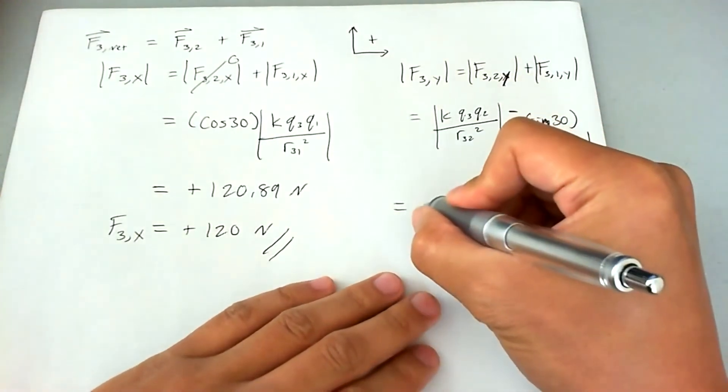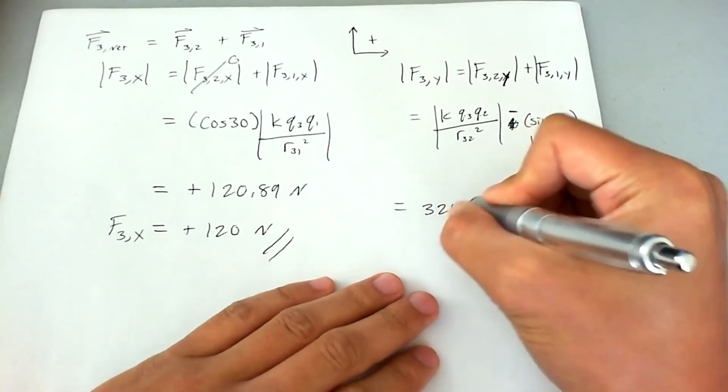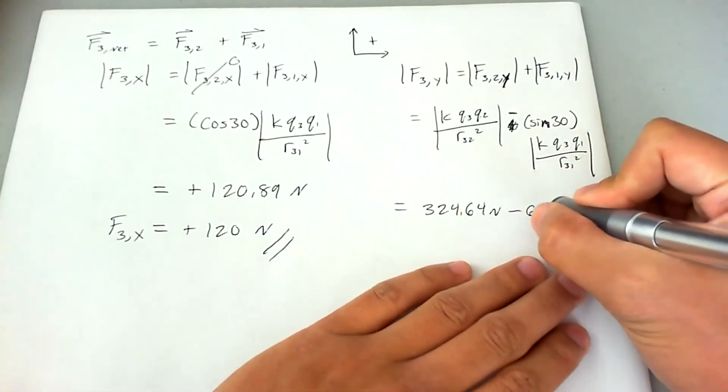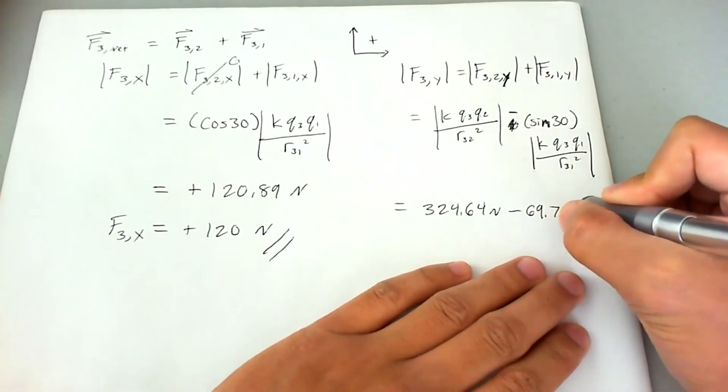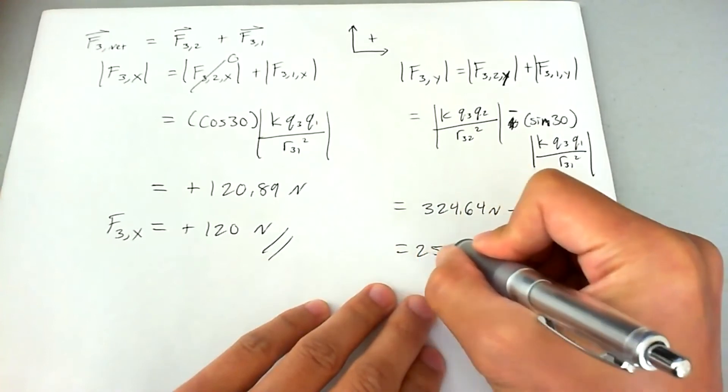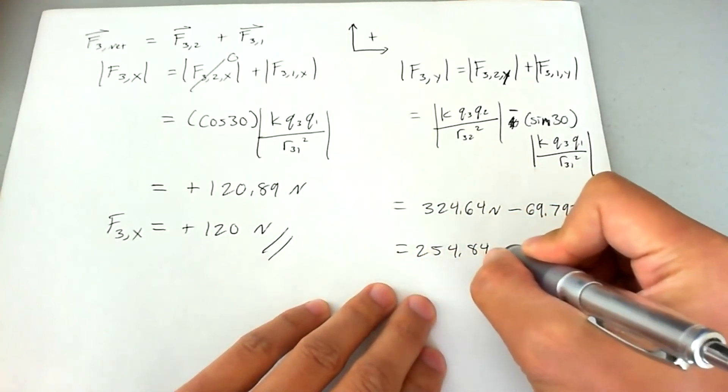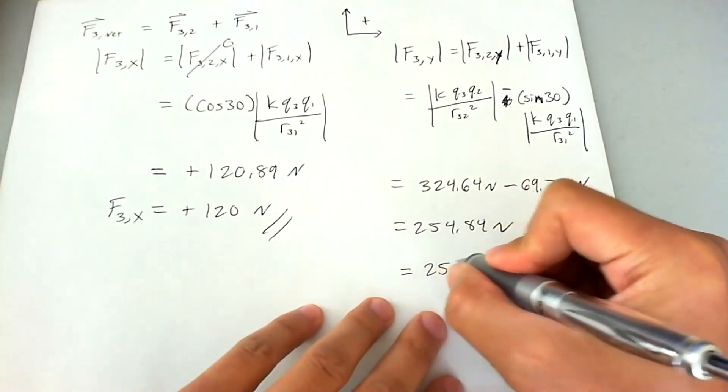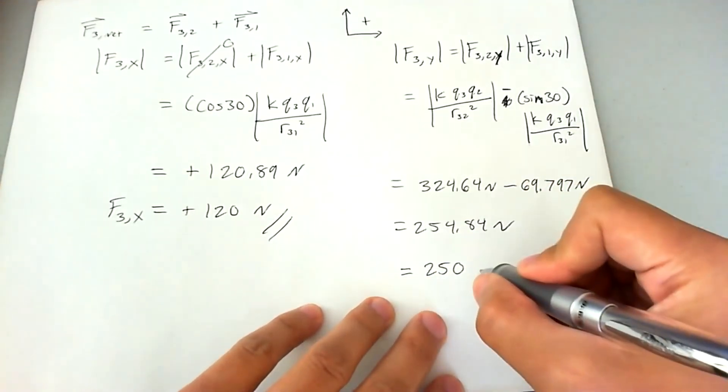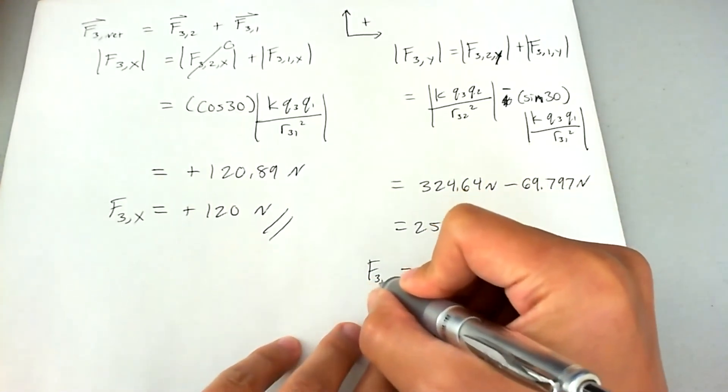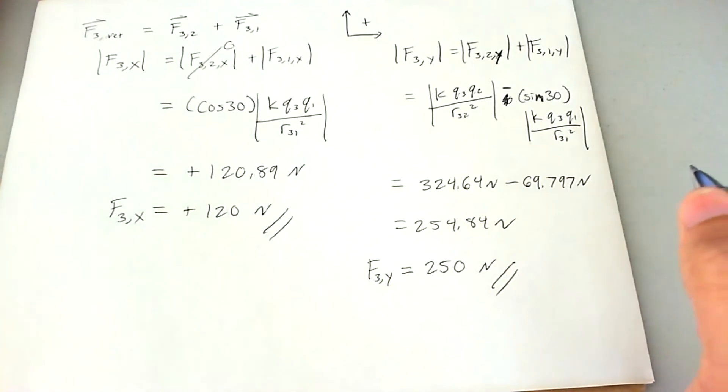The first term ends up being 324.64 newtons. Second term ends up being 69.797 newtons. And that ends up being 254.84 newtons. Again, using significant figures, we reduce it down to two, that's 250 newtons. And that is the force acting on charge three in the y direction.